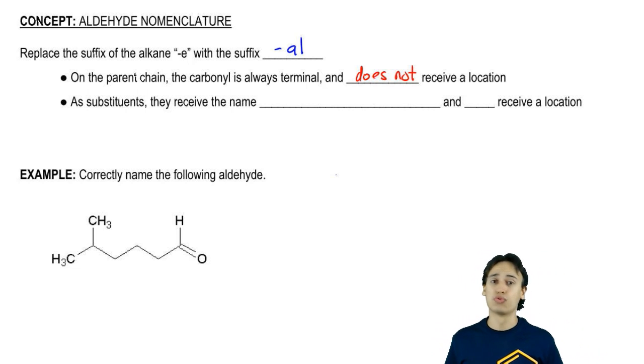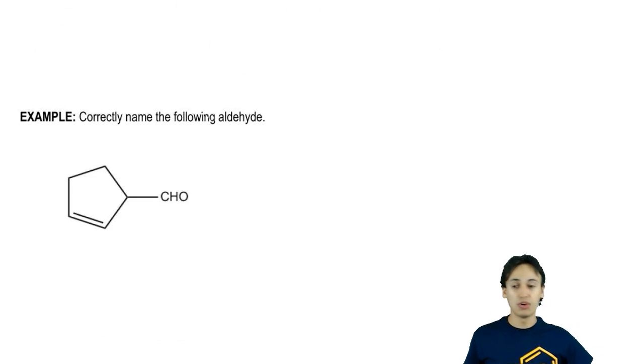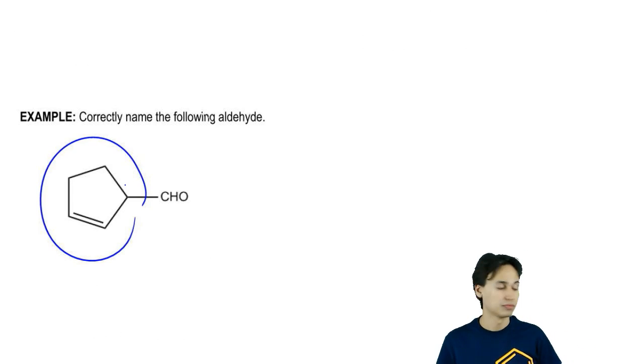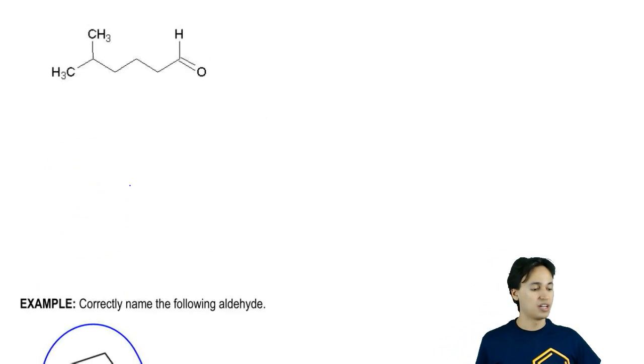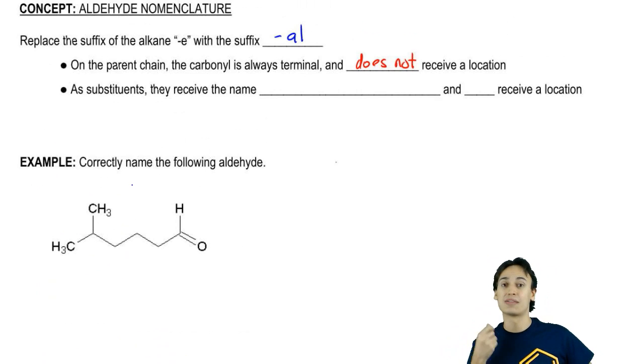There are going to be some times where you're not able to put the aldehyde inside of the root and it has to stick off. A good example of this is rings. We're going to do a naming example in a second, where the aldehyde is not part of the root chain because the root chain is going to be this five-membered ring.